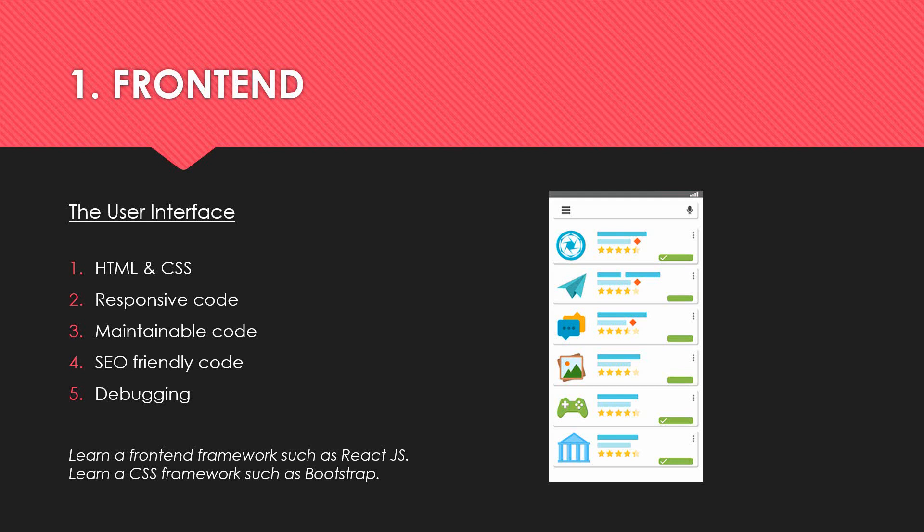Now when you get these five parts down, you know how to create a good UI and you know how the front end of an application works. Then proceed by learning a front end framework such as React.js — you can also learn JSX, which is basically built on HTML. A front end framework can make your code much more maintainable and faster. Also learn a CSS framework such as Bootstrap, which will help you write responsive code since there are already classes created in Bootstrap for responsive UIs.